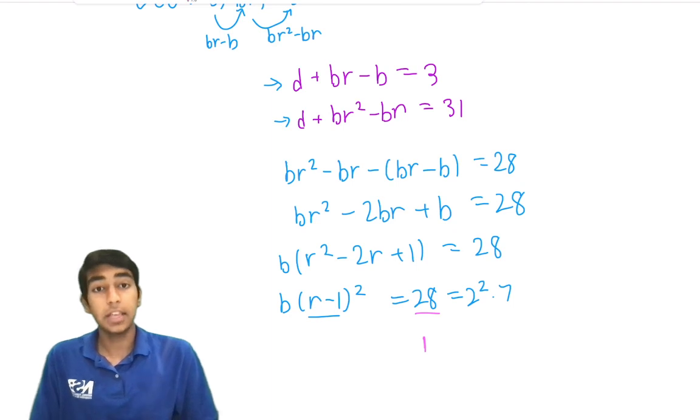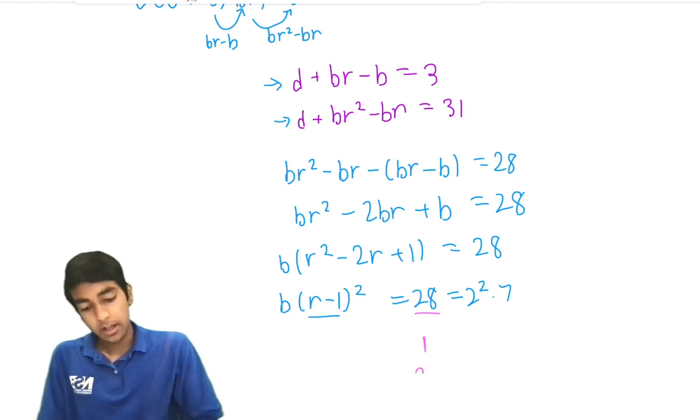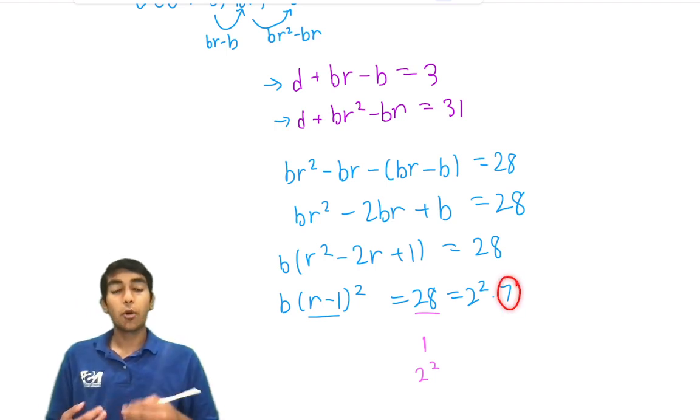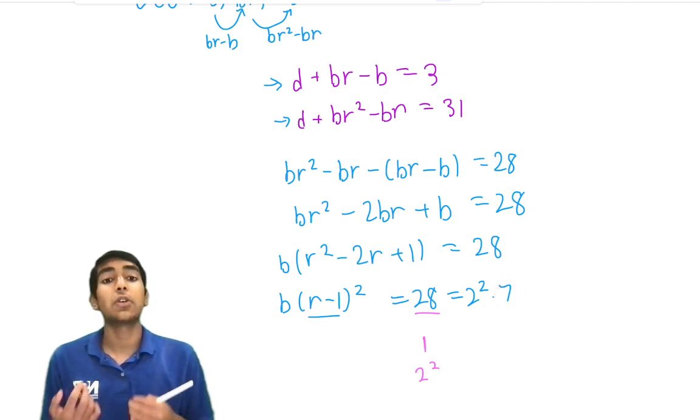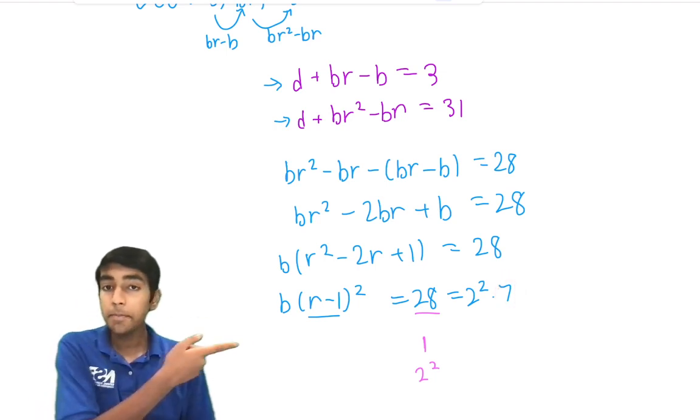One is an obvious option. But the other one is 2 squared. That's the only square factor because no other prime has more than one exponent in the prime factorization. So just 1 and 2 squared.